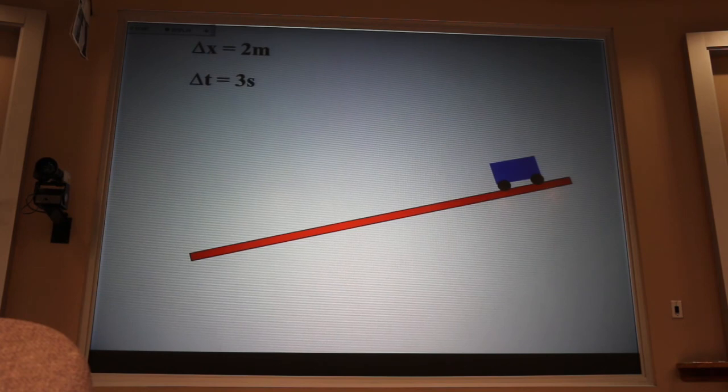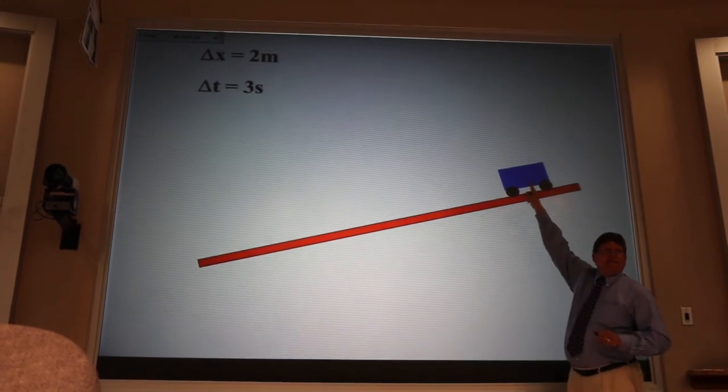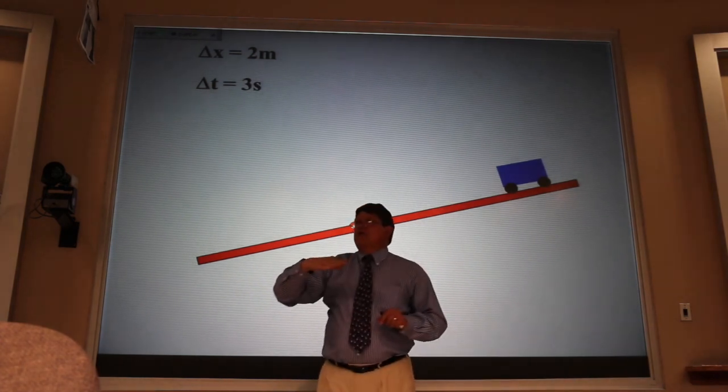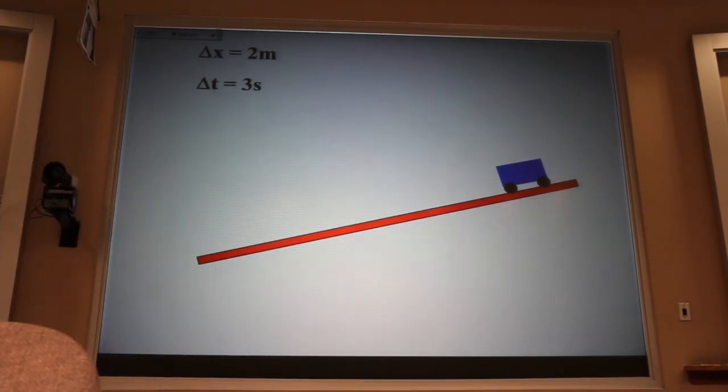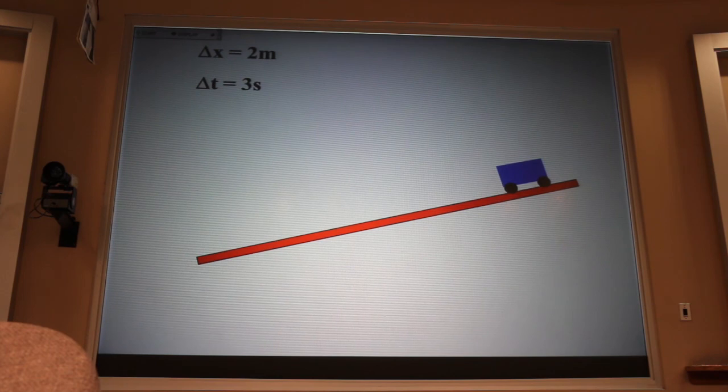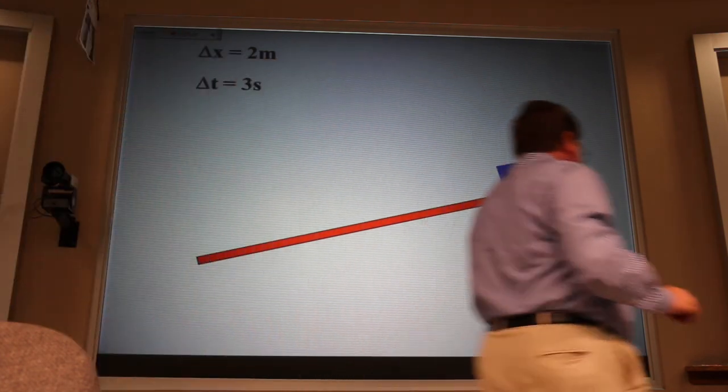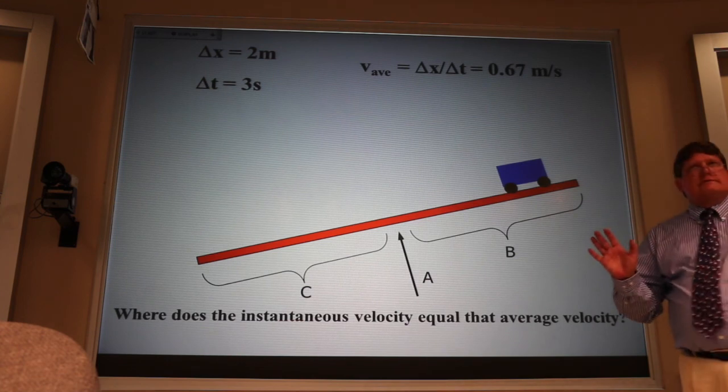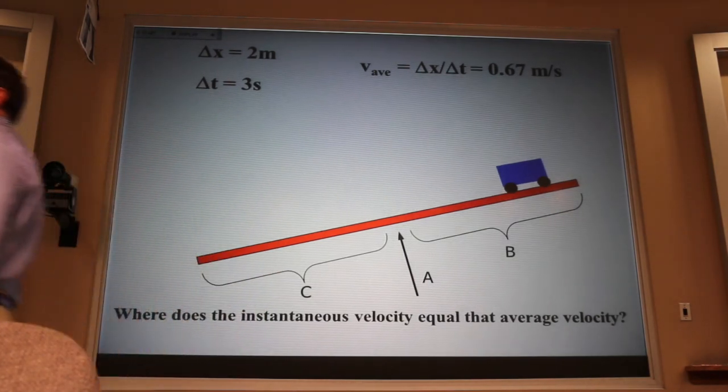Now, suppose that this cart had a speedometer right on the side. That speedometer would start with a reading of zero. And as it went down the ramp, the reading would increase. At some point on the ramp, that speedometer is going to have a reading of 0.67 meters per second. In other words, at some location, the average velocity and the instantaneous velocity will have the same value. Now, my question is, where does that happen? Does it happen halfway down the ramp? Does it happen somewhere in the top half of the ramp? Or does it happen somewhere in the bottom half of the ramp? Now, we're going to vote. Either A, B, or C. Talk to your neighbor first and tell your neighbor what you're going to vote. And try to convince your neighbor to vote with you.